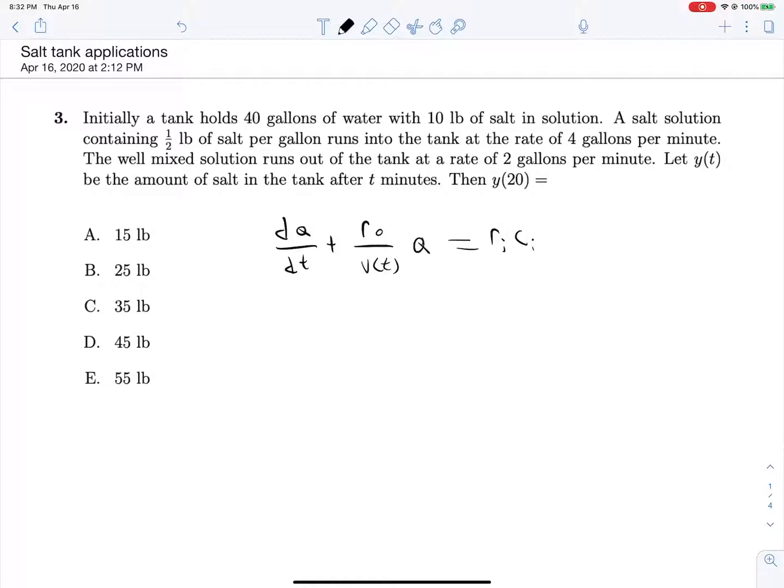So let's set this up given our numbers here. We have a tank with 40 gallons of water and initially we have 10 pounds of salt, so we can say that q(0) equals 10. That'll come in handy in a bit. A salt solution containing one half pound of salt per gallon is running into the tank at a rate of four gallons per minute, so that gives us 2 over there because that's our rate in - the one half is our concentration.